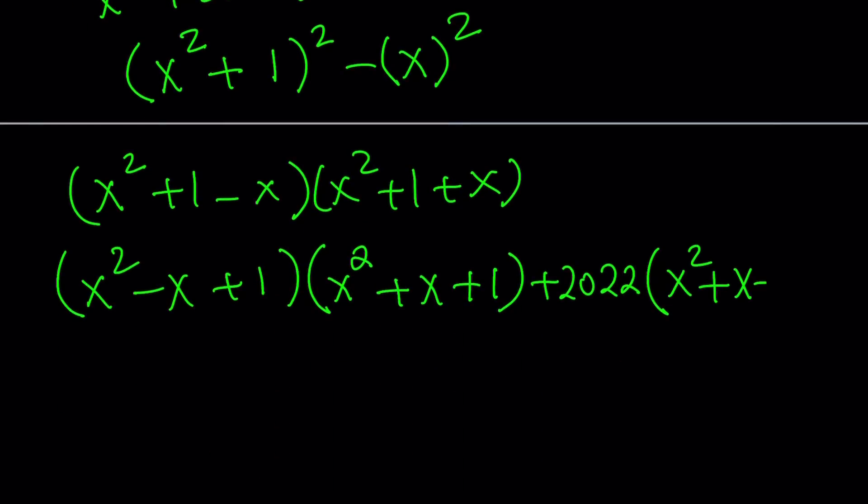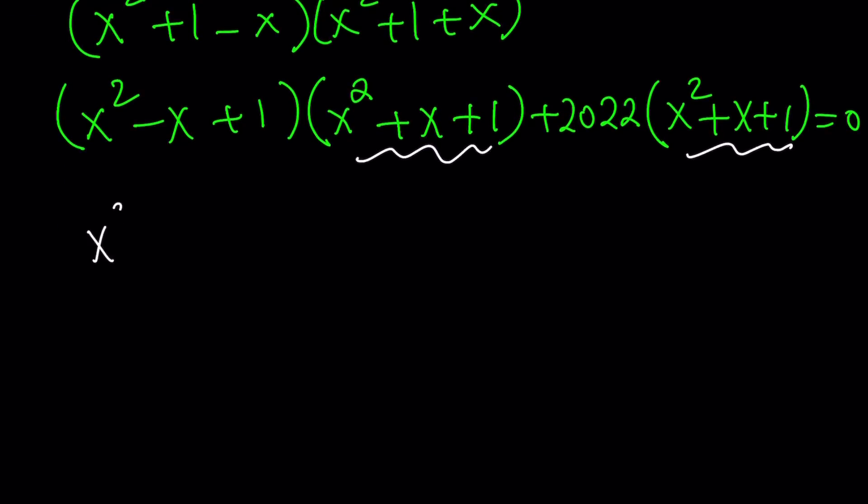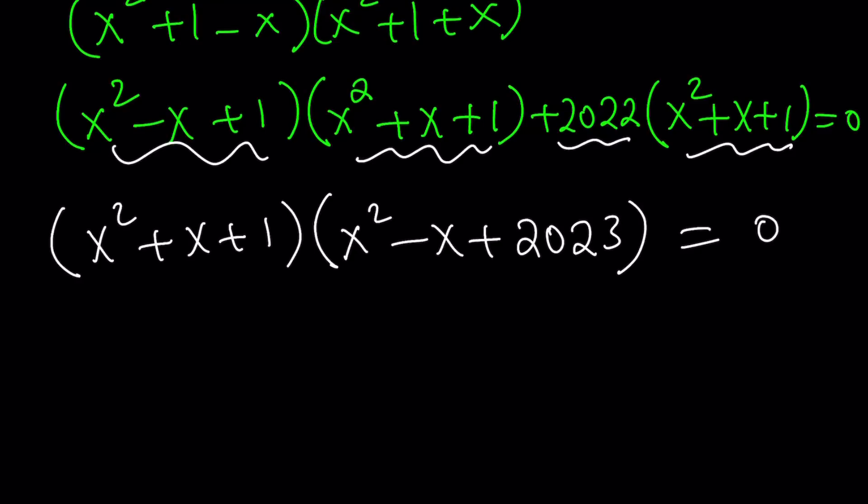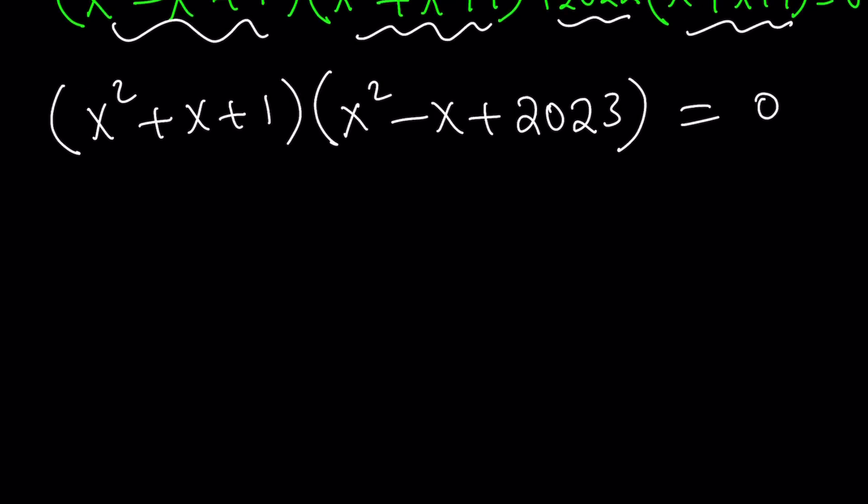This kind of justifies what we did because now we have a common factor: x squared plus x plus 1. So we can take it out. We have this plus this, and it's easy because we're just going to add them. And 1 plus 2022 gives us the new year 2023. We're going to set it equal to 0. It's good because now we have two quadratics, very easy to solve by using the quadratic formula. But the solutions are going to be kind of interesting.